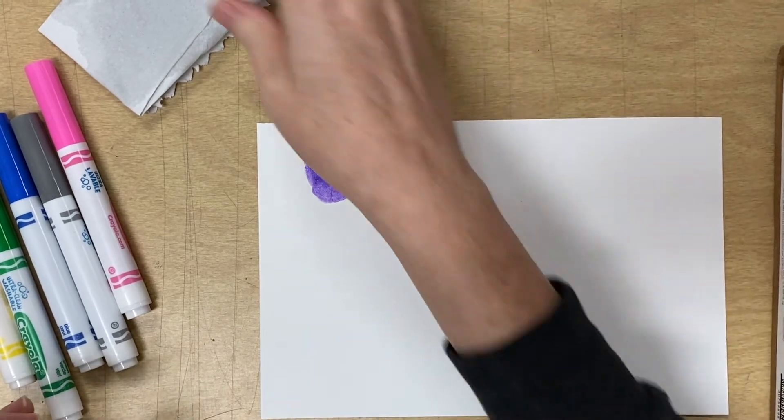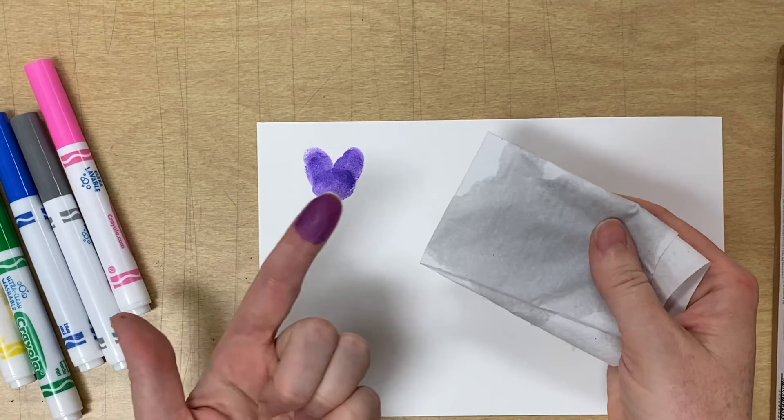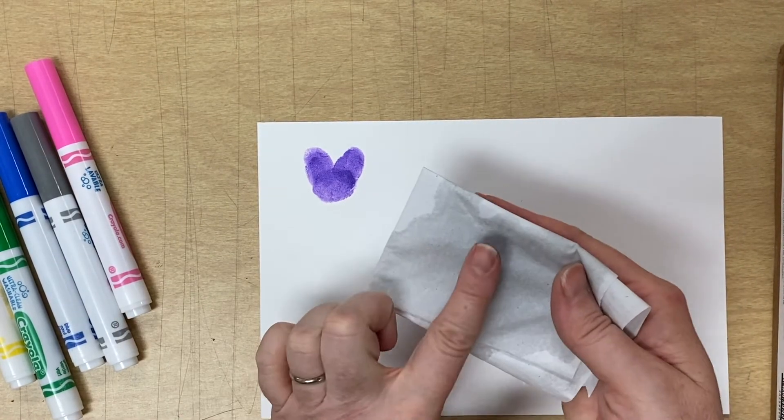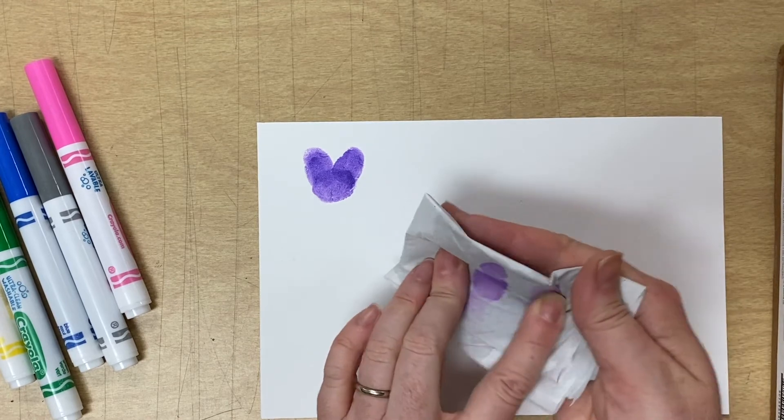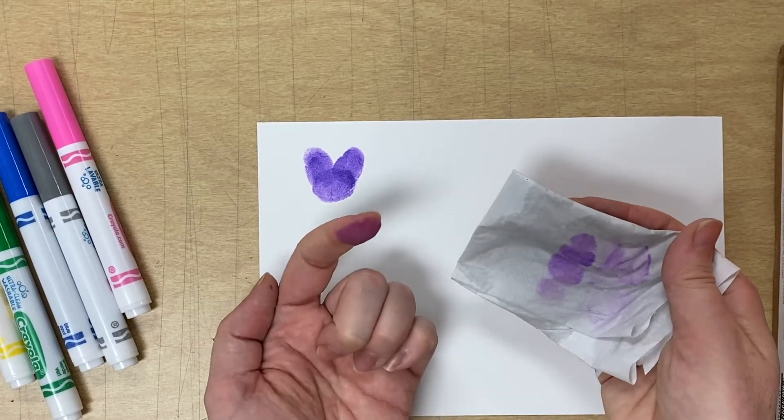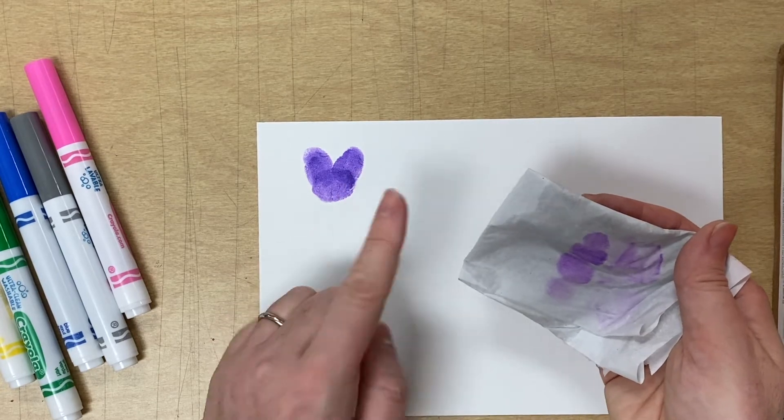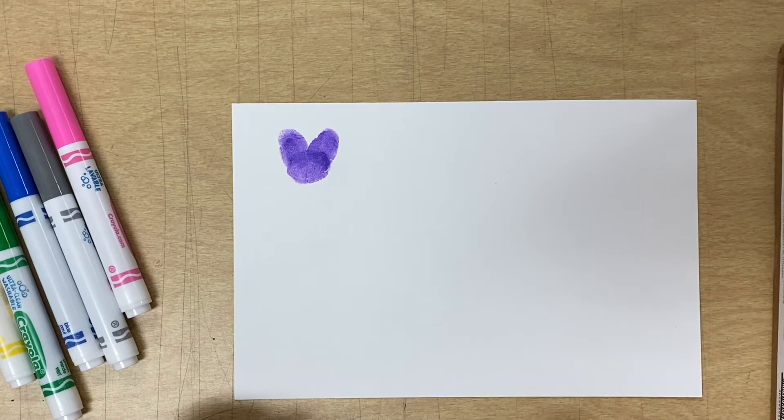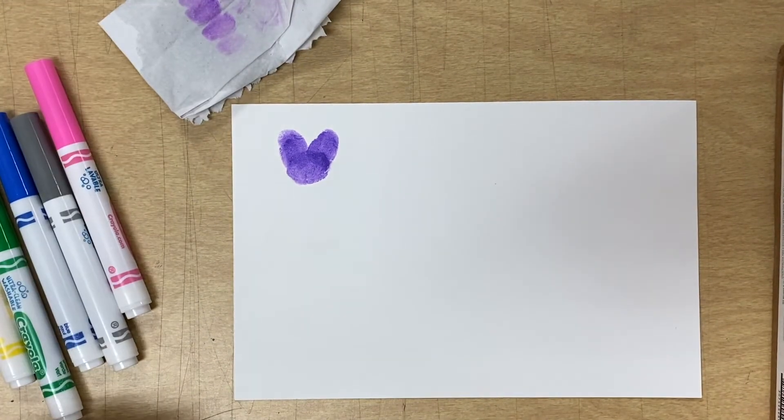Now once you are done with that color, you still have the purple on your finger, so that's where you're just going to wipe it onto your paper towel. Now there'll be a little left over, but you can see it's not making any more marks and you're ready for the next color.